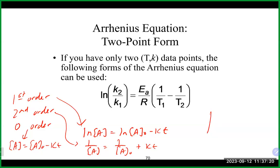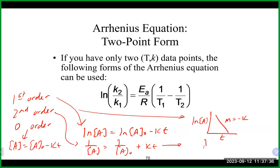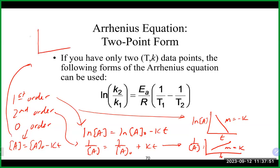Each order also has a specific graph associated with it. For first order, a plot of ln[A] versus time gives a straight line where the slope equals the negative rate constant. For second order, a plot of 1/[A] versus time gives a positively sloping line where the slope equals k. For zero order, concentration versus time gives a negatively sloping line with slope equal to negative k. They also have different half-life equations.